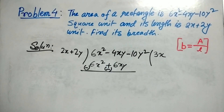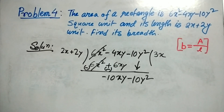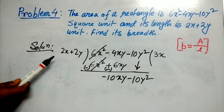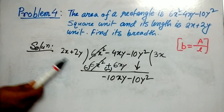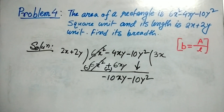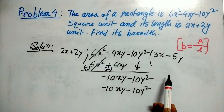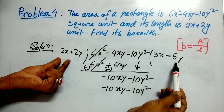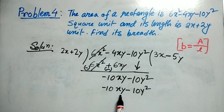We multiplied 3x with the divisor and placed it at the proper position. After subtraction, minus 4xy and minus 6xy gives minus 10xy, and minus 10y squared has come down. We have to find a term by which we multiply 2x to get minus 10xy — if we multiply 2x by minus 5y we get minus 10xy.